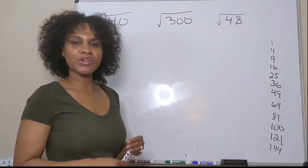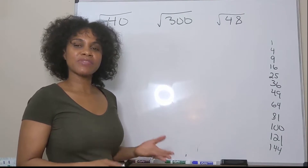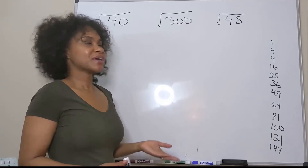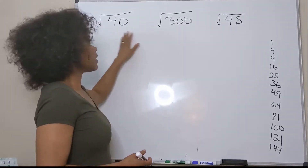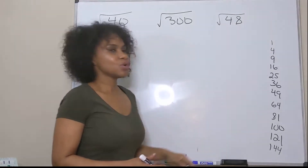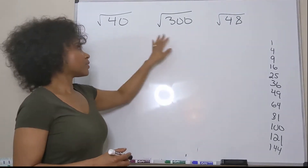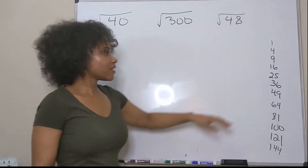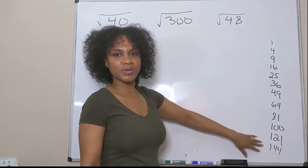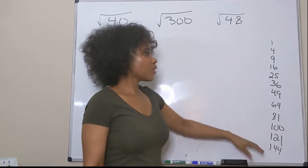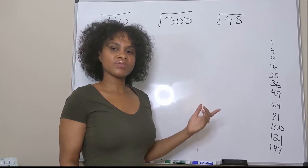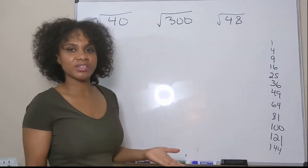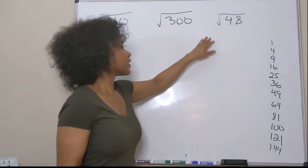In this brief video I'm going to show you how to simplify square roots by rewriting them in simplest radical form. Basically, what you want to do is take the number under your radical and find two factors of that number, where one of those factors has to be a perfect square. I've listed the first 12 perfect squares over here. You want one of those factors to be a perfect square, then take the square root of it and leave your other factor under the radical.